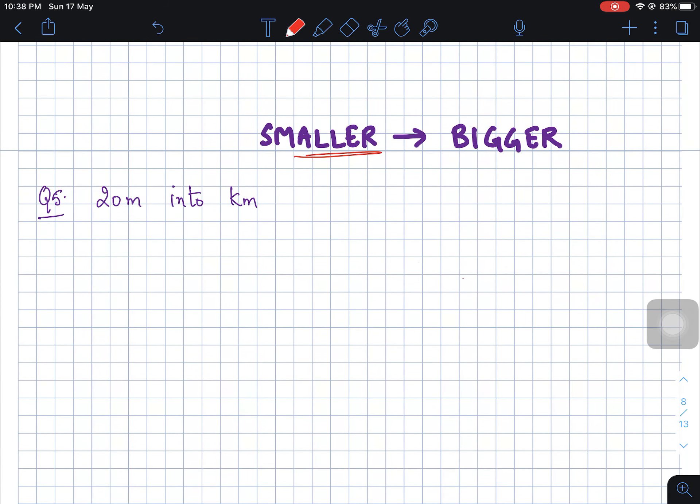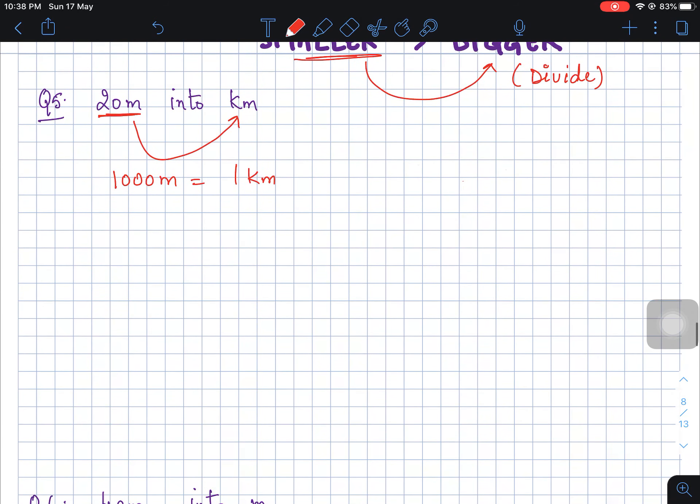Now we have smaller to bigger. When we convert smaller unit to bigger unit, we always divide. So they are asking you to convert 20 meter into kilometer. We know that 1000 meter is equal to 1 kilometer. So 20 meter is equal to 20 meter divided by 1000, and you will get the answer in kilometer.